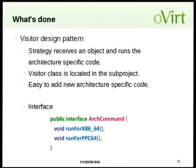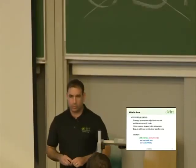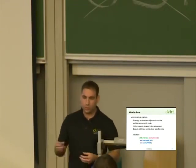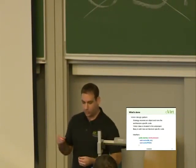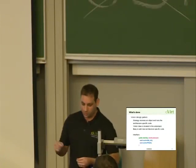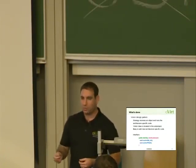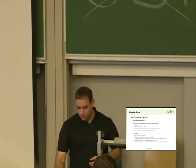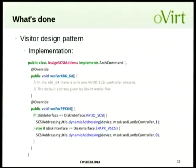We also used a Visitor design pattern, with the specific implementation in a sub-project. The strategy gives you the correct code for the architecture, and the visitor is responsible for actually executing the code for the specific command. For example, we have an assign SCSI address architecture command with an implementation for x86 and an implementation for PPC. For x86 it's still empty because we still rely on libvirt's logic, while for PPC we have different addressing depending on whether it's VirtIO SCSI or SPAPR vSCSI.